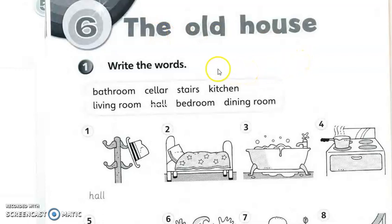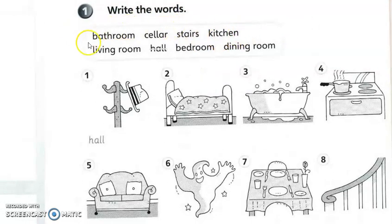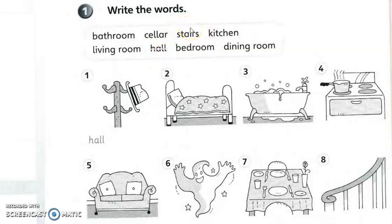Refer to your textbook according to the topic 'The Old House'. Write the words — you are given a few words here: Bathroom — bilik air. Living room. Cellar — bilik bawah tanah, like in America and so on, you can also have a cellar. Hall. Stairs — tangga. Bedroom. Kitchen. And also the Dining room.